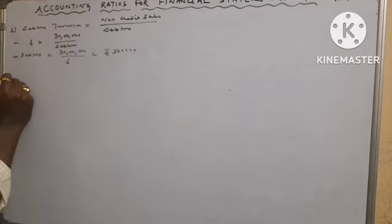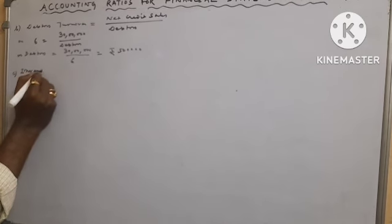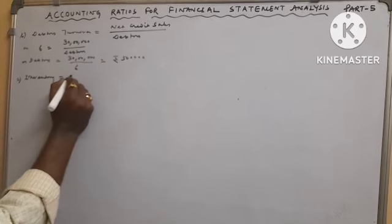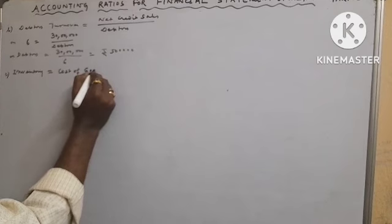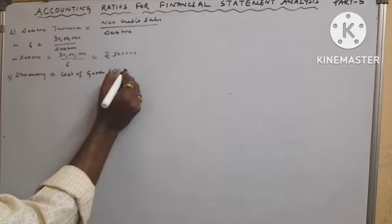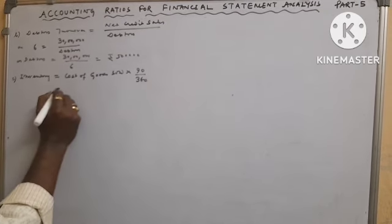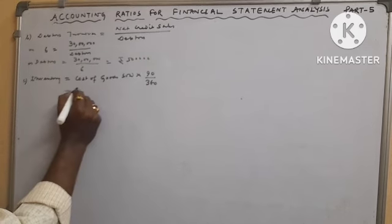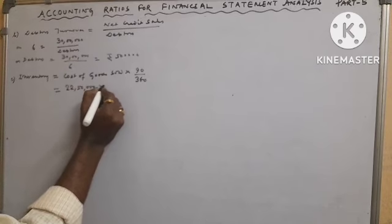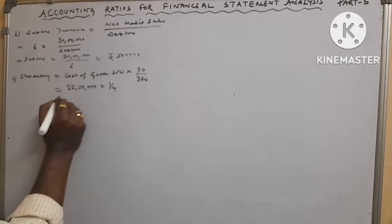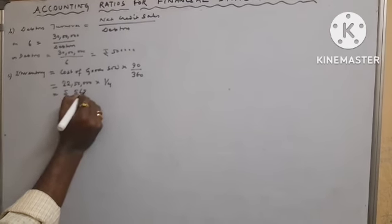Now number C, inventory equals to cost of goods sold into 90 divided by 360. Cost of goods sold we calculated previously 22 lakhs 50 thousand into 1 by 4 equals to rupees 5 lakhs 62 thousand 500.